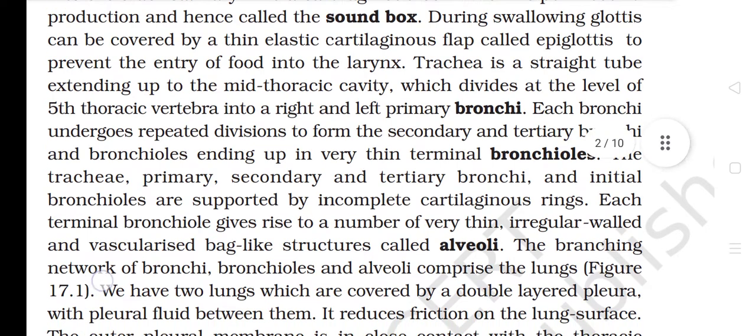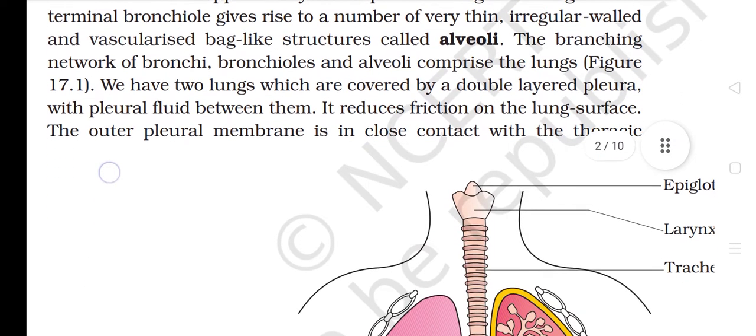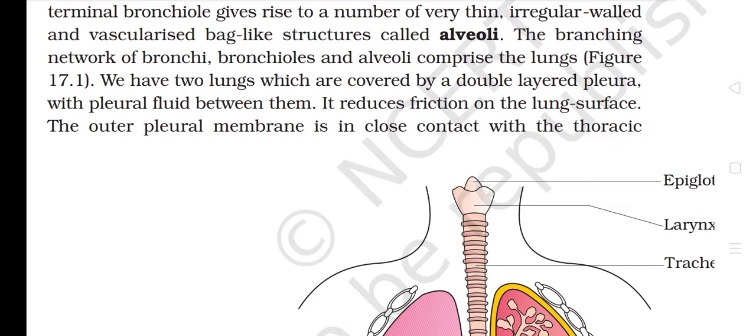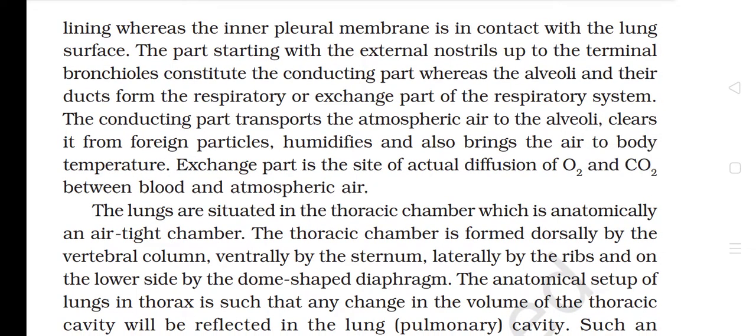The bronchioles end in very thin terminal bronchioles. The trachea, primary, secondary and tertiary bronchi and initial bronchioles are supported by incomplete cartilaginous rings. Each terminal bronchiole gives rise to a number of very thin, irregular-walled and vascularized bag-like structures called alveoli. The branching network of bronchi, bronchioles and alveoli comprise the lungs. We have two lungs which are covered by a double-layered pleura with pleural fluid between them, which reduces friction on the lung surface. The outer pleural membrane is in close contact with the thoracic lining whereas the inner pleural membrane is in contact with the lung surface. The part starting with the external nostrils up to the terminal bronchioles constitutes the conducting part, whereas the alveoli and their ducts form the respiratory or exchange part of the respiratory system.